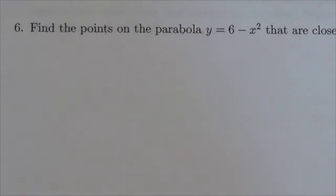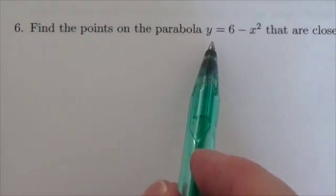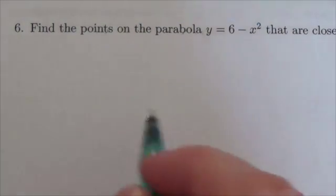Okay, hi everybody. This is the Math 31 Optimization Review Package and this is question six. We're going to find the points on the parabola y equals six minus x squared that are closest to the point (0, 3).